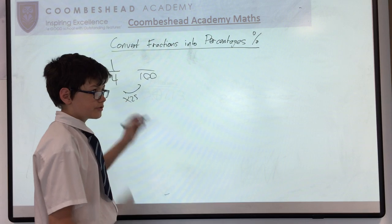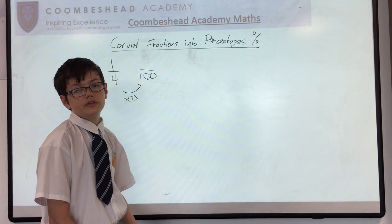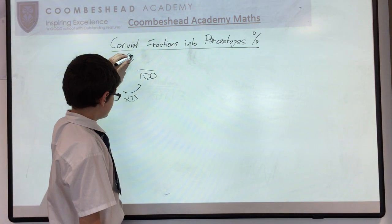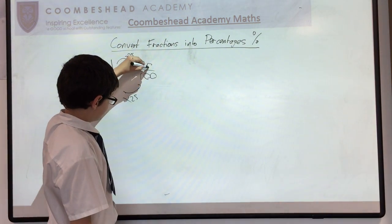And then since this is the denominator, you have to do it to the numerator as well. So 1 times 25 would be 25.